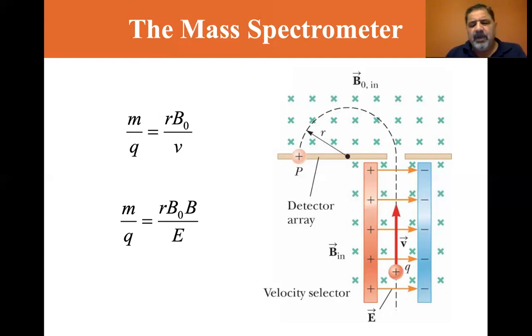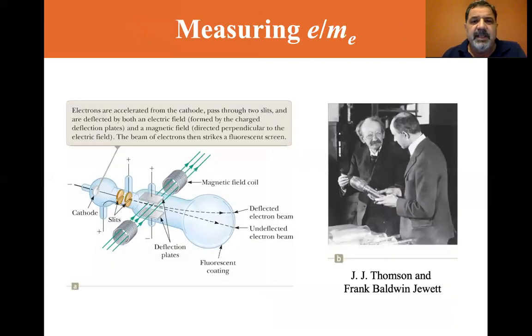So that's a mass spectrometer. We often used in space to try to look at some of the particles that are out in space. Okay. Here is a device here by Thompson and Jewett.